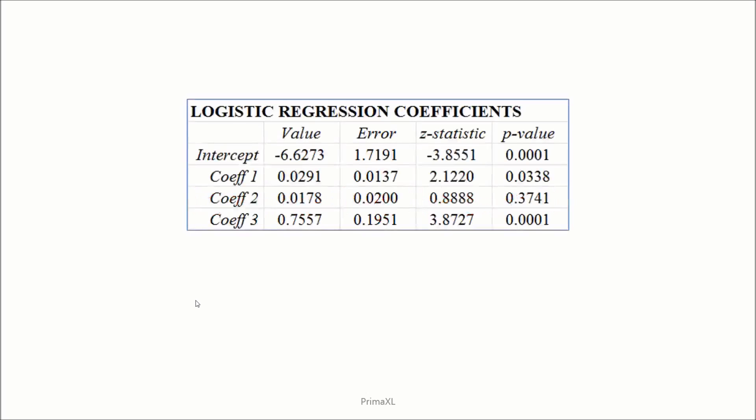Let's just focus on the result as shown here. In the first column, we have the labels. Intercept means the coefficient beta 0. Coef 1 means beta 1. Coef 2 means beta 2, and so on.